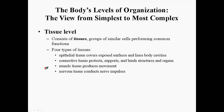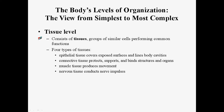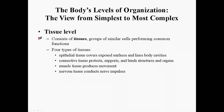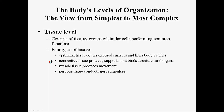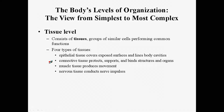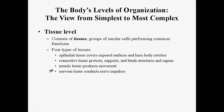The tissue level consists of tissues, which are groups of cells that perform the same functions. There are four types of tissues in the body. Epithelial tissue covers exposed surfaces and lines body cavities. Connective tissue protects, supports, and binds structures and organs together. Muscle tissue produces movement. And nervous tissue conducts nerve impulses.